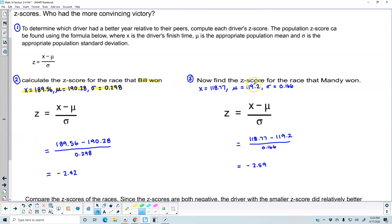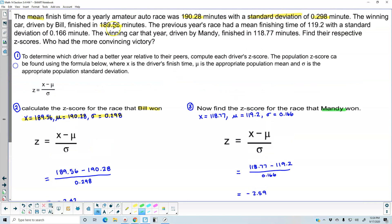Now in step three, we want to find the z-score for the race that Mandy won. Well, if we go back up here, we can see that Mandy finished in 118.77 minutes. So we know that the data value x is equal to 118.77. We know that the mean for that previous race had a finishing time of 119.2, so the population mean is 119.2. And the standard deviation is 0.166.